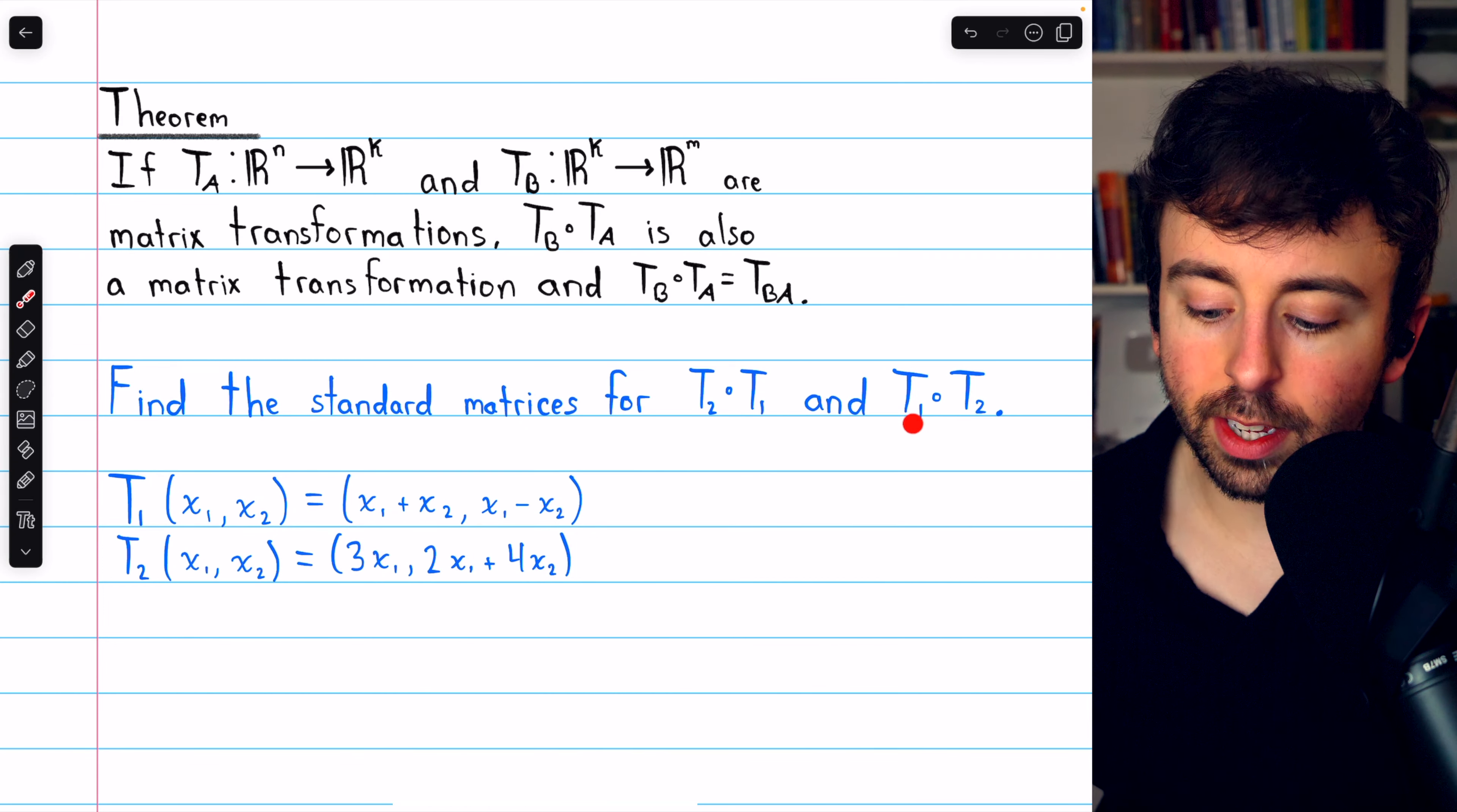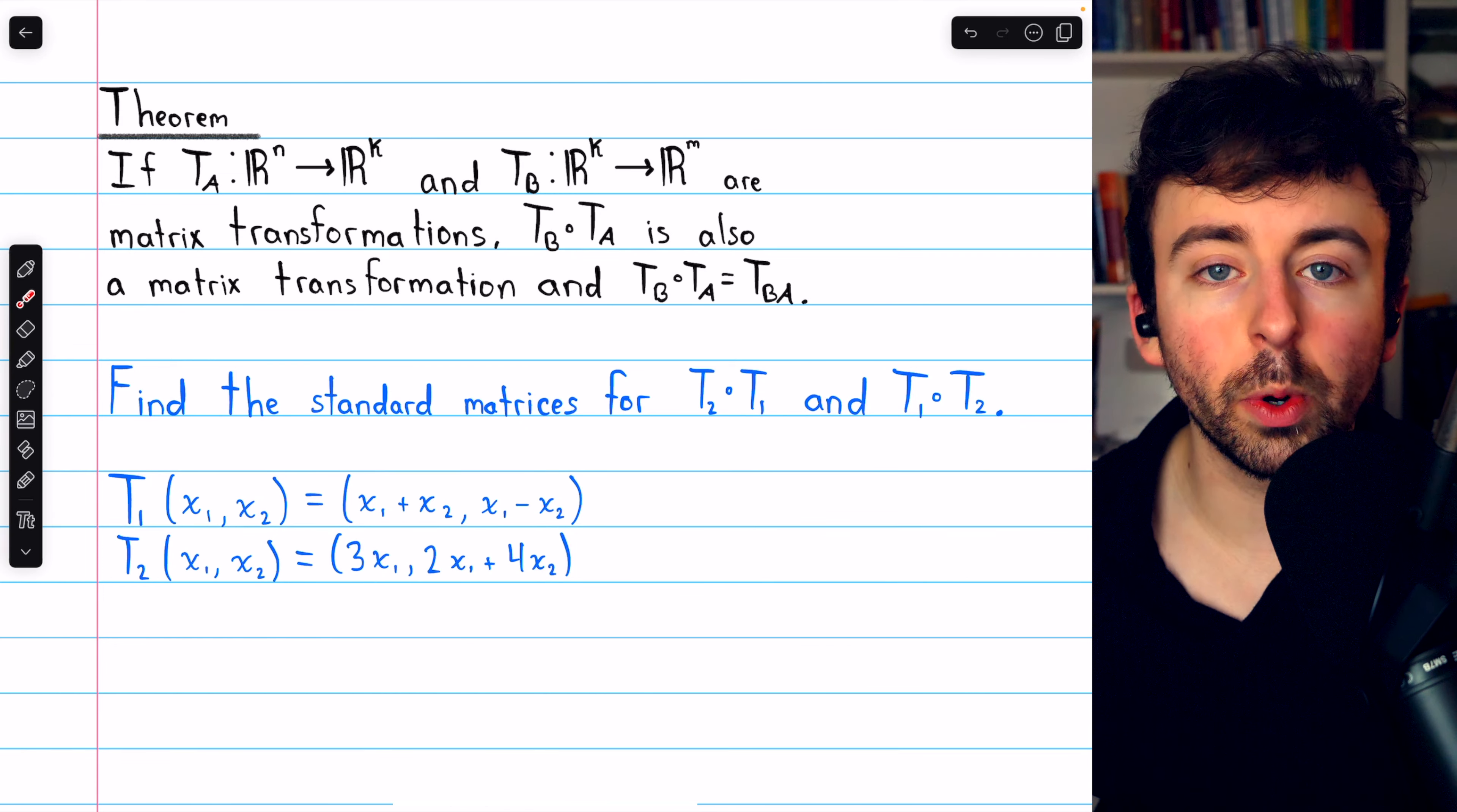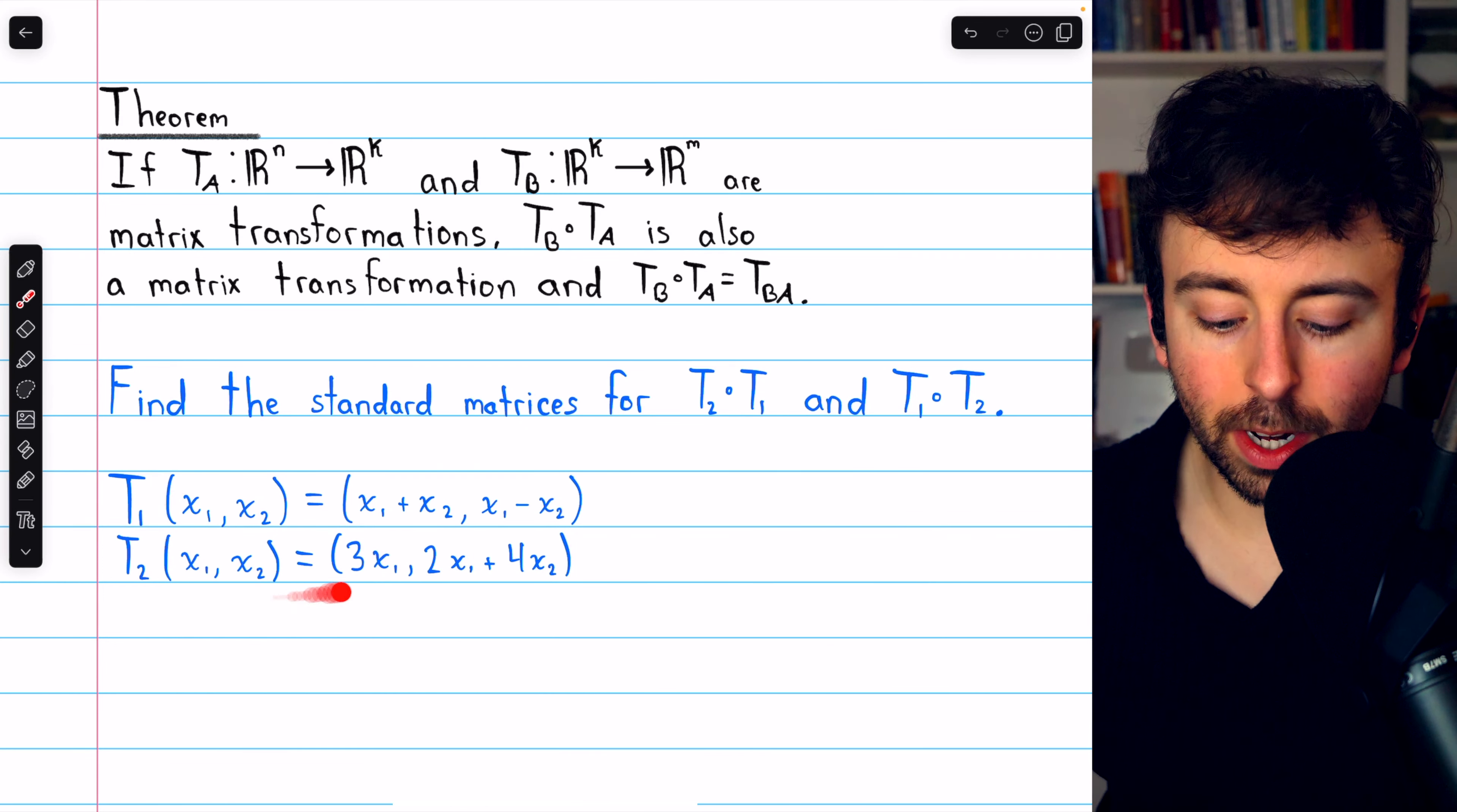Let's find the standard matrices for these two compositions of matrix transformations, T2 circle T1 and T1 circle T2, where T1 and T2 are the matrix transformations given here.